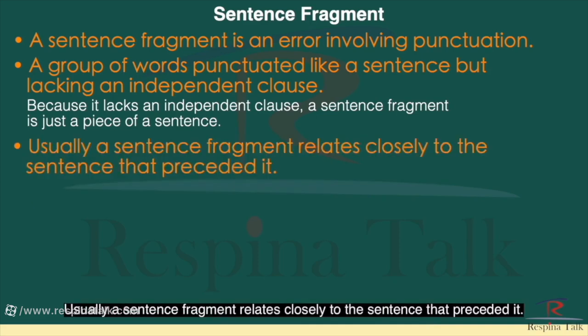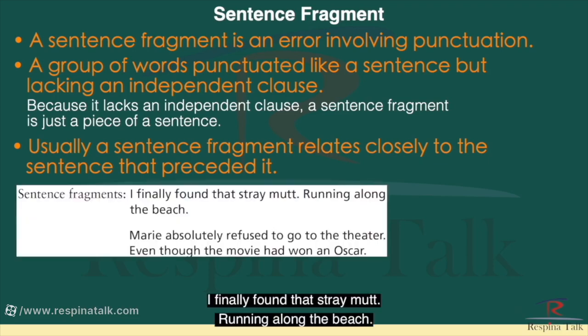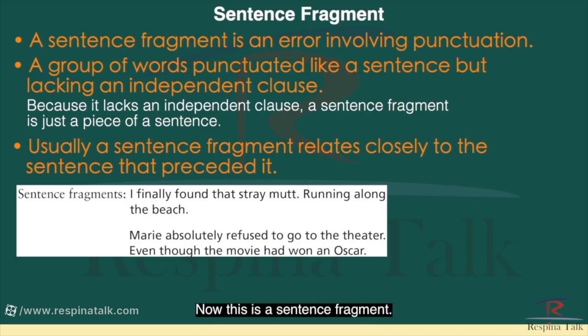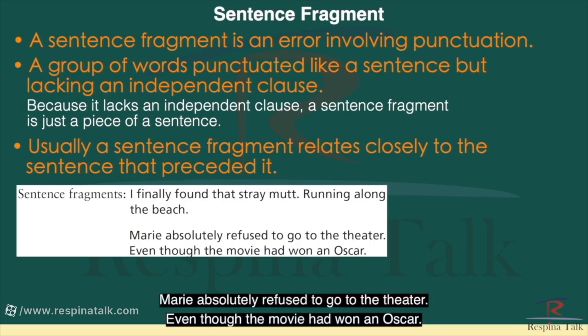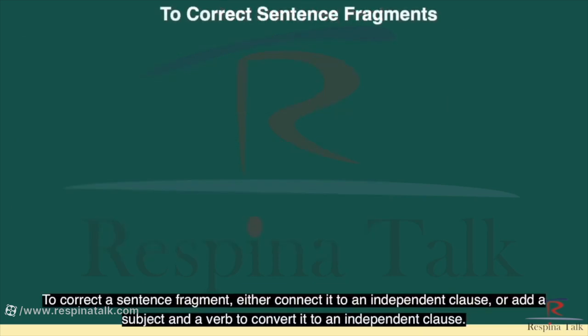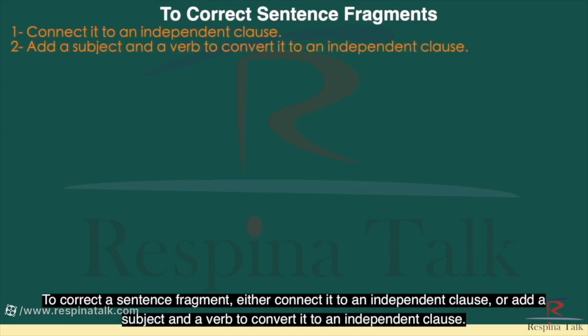Usually a sentence fragment relates closely to the sentence that preceded it. The previous two examples might have appeared in the following contexts: 'I finally found that stray mutt. Running along the beach.' — this is a sentence fragment. 'Mary absolutely refused to go to the theater. Even though the movie had won an Oscar.' To correct a sentence fragment, either connect it to an independent clause or add a subject and a verb to convert it to an independent clause.